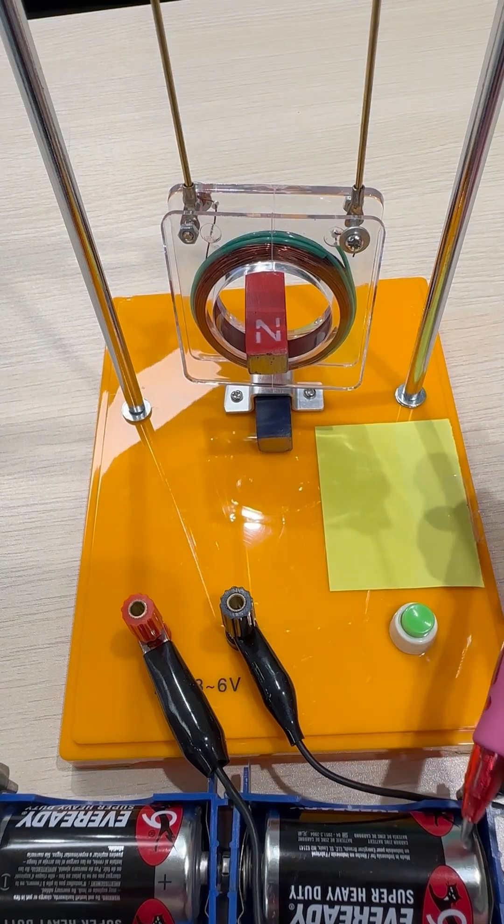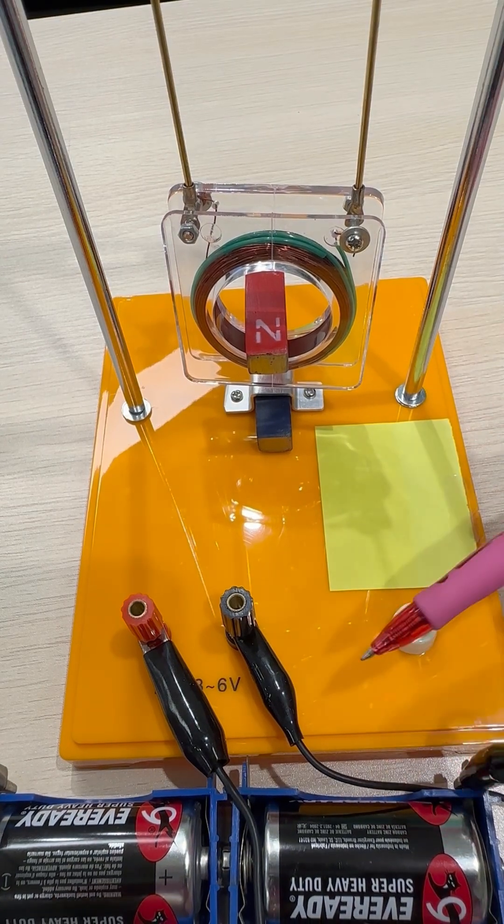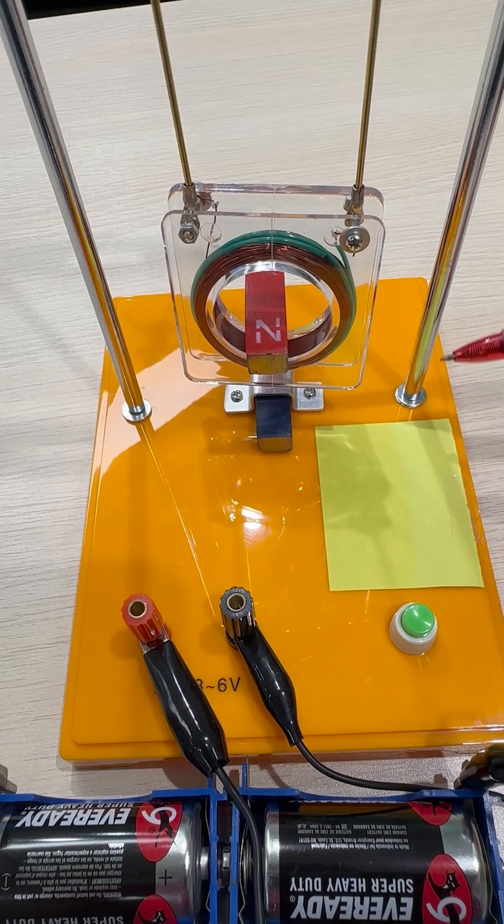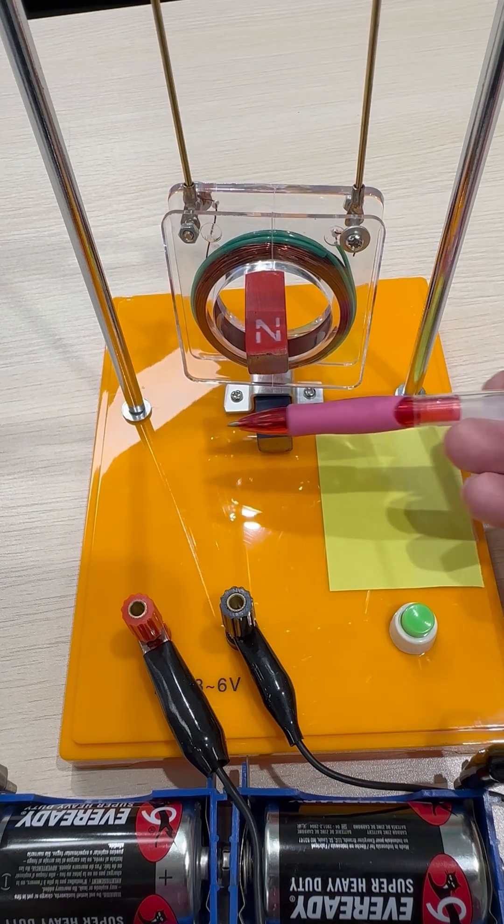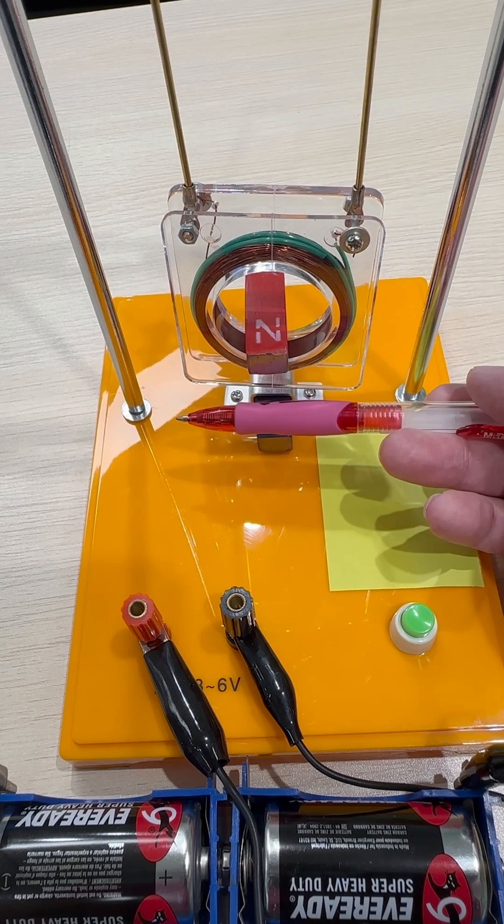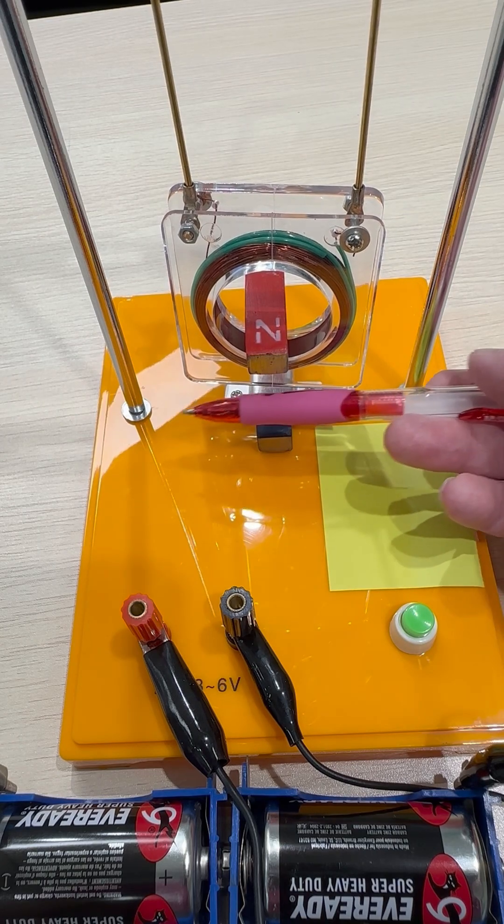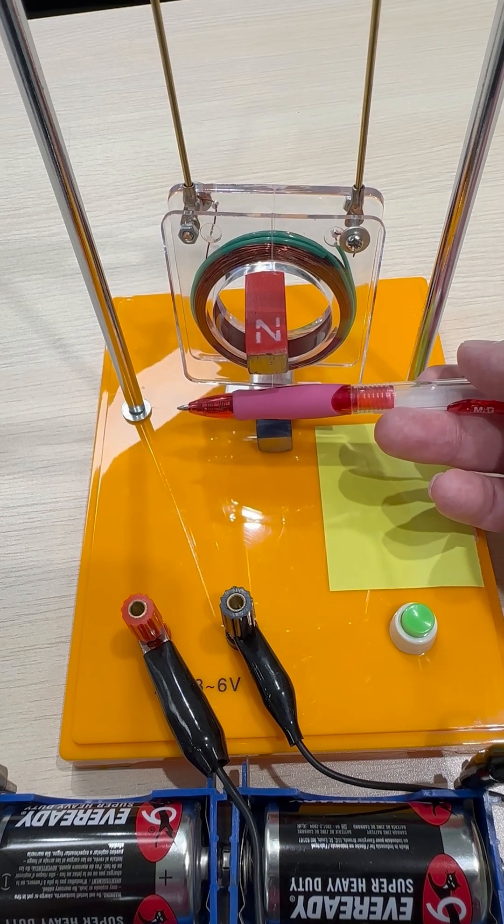We have the batteries over here with the positive terminal here and the current will go up this pole, down the rod, and flow to the left, right below in between the north and south poles of the magnet.